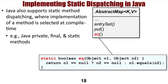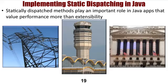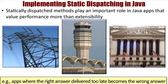Although statically dispatched methods cannot be overridden by subclasses, the underlying JVM can implement and optimize them more efficiently than dynamically dispatched methods, since fewer instructions are typically required to invoke a statically dispatched method. These types of methods, therefore, play an important role in certain types of Java apps that value performance more than extensibility, such as time-critical apps, where the right answer delivered too late becomes the wrong answer.